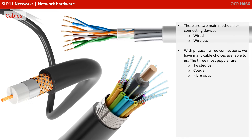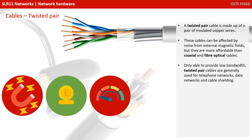There are two main methods for connecting devices: via wired or wireless. With physical wired connections, we have many cable choices available to us. The three most popular in use today are twisted pair, coaxial and fibre optic. A twisted pair cable is made up of a pair of insulated copper wires. These cables can be affected by noise from external magnetic fields, but they're more affordable than both coaxial and fibre optic cables. They're only able to provide a relatively low bandwidth and twisted pair cables are generally used for telephone networks, data networks and cable shielding.